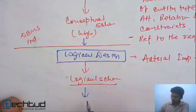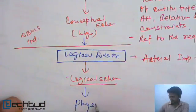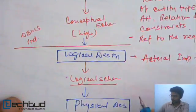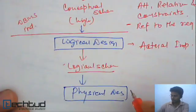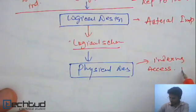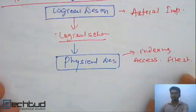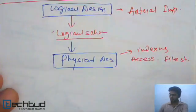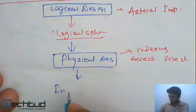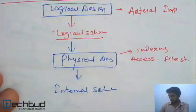From the logical schema, we go for physical design. In this step, we take care of indexing, access mechanisms, and file structure. After this physical design, we have an internal schema, also called a physical schema.